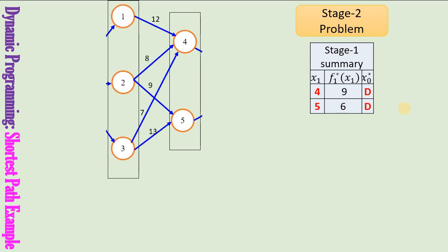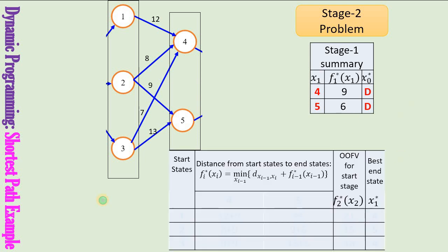Now let us solve the stage 2 problem. Stage 2 problem begins at stage 2 and ends in stage 1. The possible start states are 1, 2, and 3, and the possible end states are 4 and 5. If you make a decision to go from node 1 to node 4, the objective function value will be 12 (the current arc cost) plus 9 (the previous stage value), giving the path from node D up to node 1 as 12 plus 9.